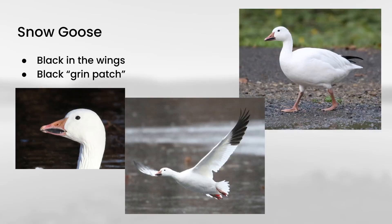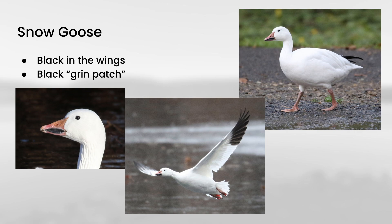And to confuse matters a little bit more with white waterfowl, we have a wild native goose that is almost completely white, and that is snow goose. On these, you are looking for mainly the black in the wingtips as a great way to tell these from the other types of white waterfowl. You'll also see that the bill is a little bit different, and they usually have this large black grin patch in the bill. So if you look for those two features, you should be set.